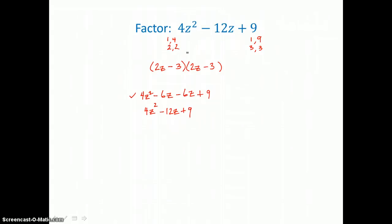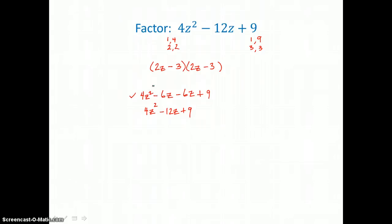That happened to be a perfect square trinomial, factoring into a binomial times itself. So I can write it as the quantity 2Z minus 3, squared.